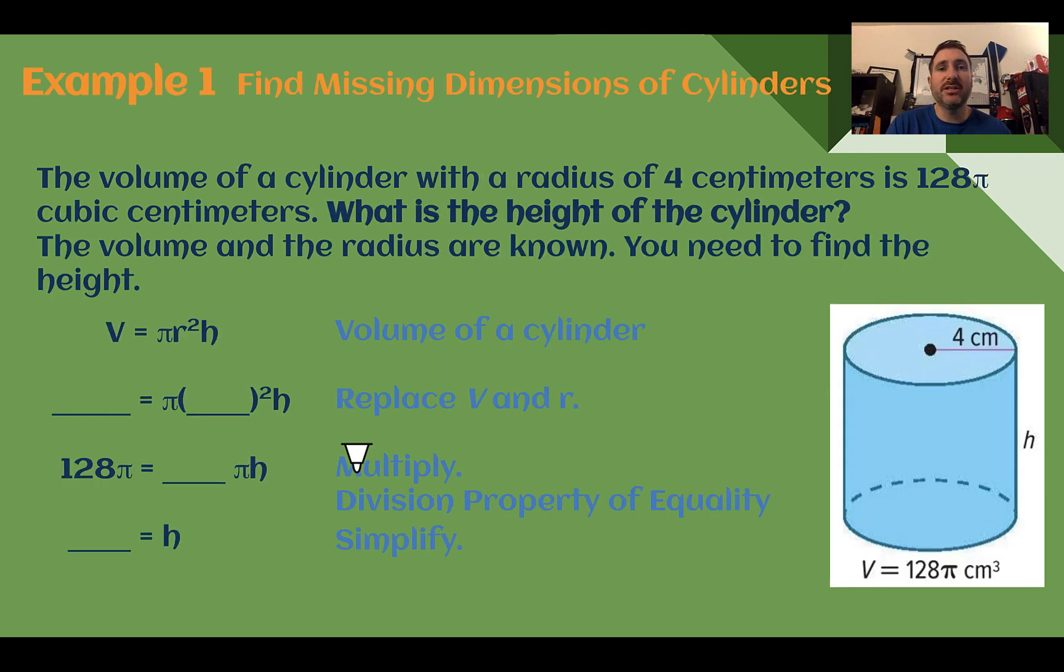Example 1. Find missing dimensions of cylinders. The volume of a cylinder with a radius of 4 centimeters is 128π cubic centimeters. What is the height of the cylinder? So we know the volume and we know the radius. Tells us both in the problem and in the picture.